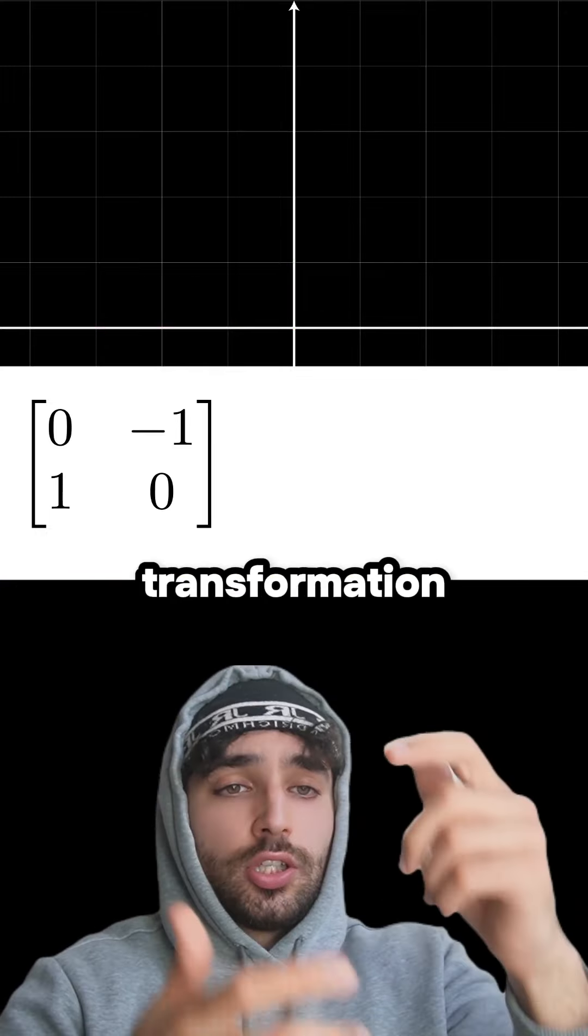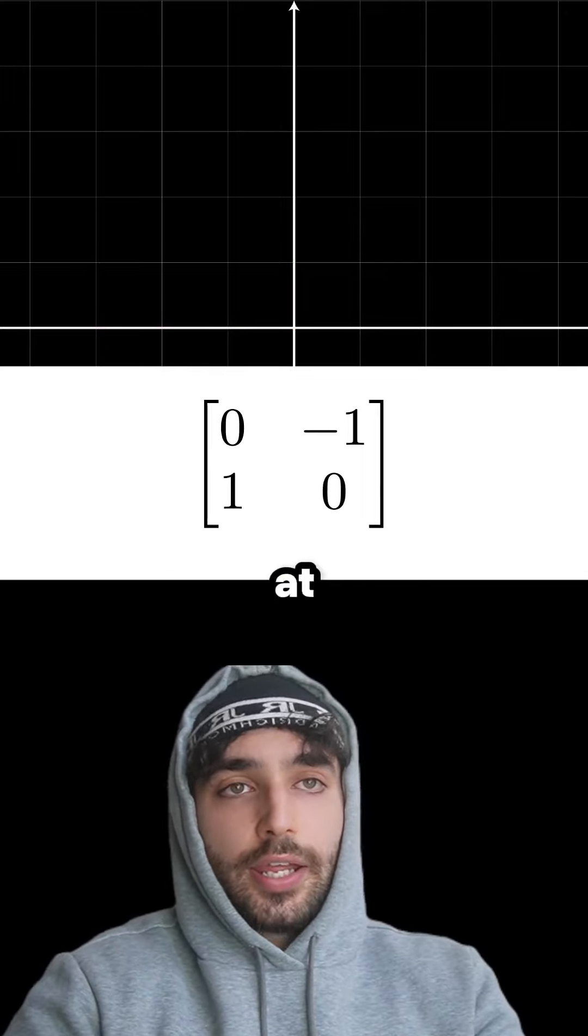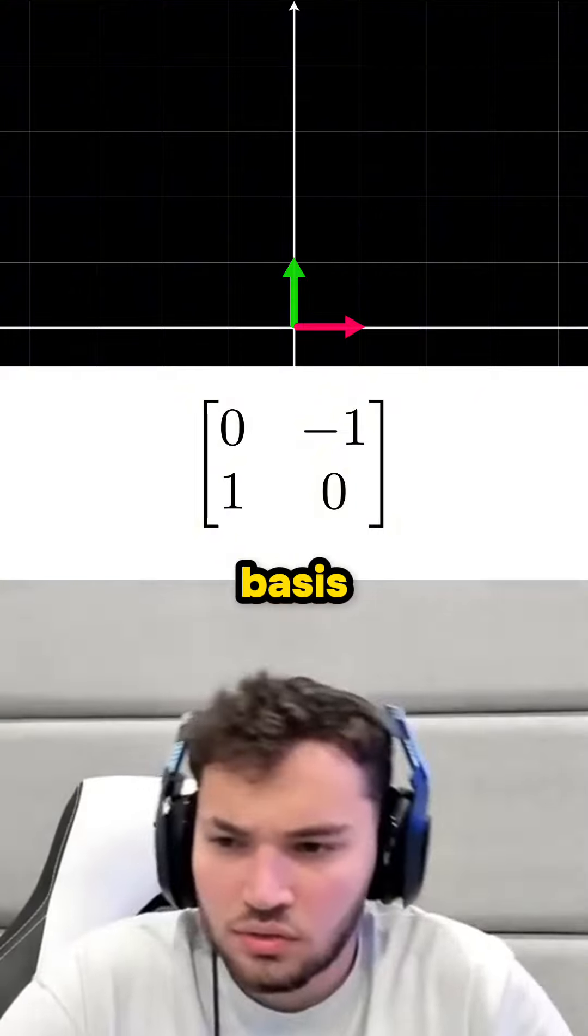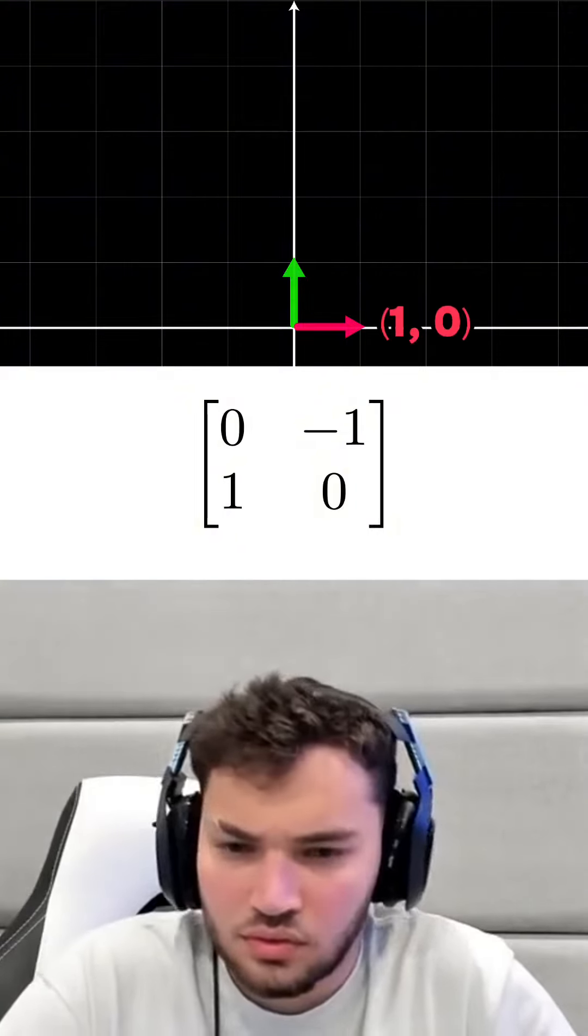Is there a way to know what transformation the matrix is going to do just by looking at it? Yeah, so this red and green arrow are our basis vectors, right? With coordinates 1, 0, and 0, 1.